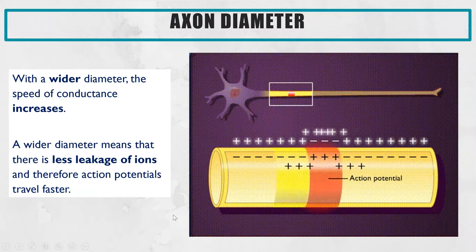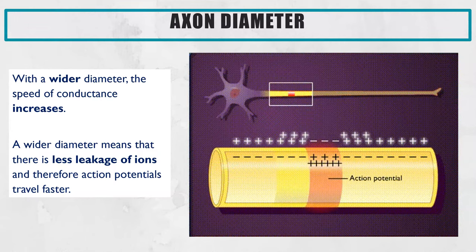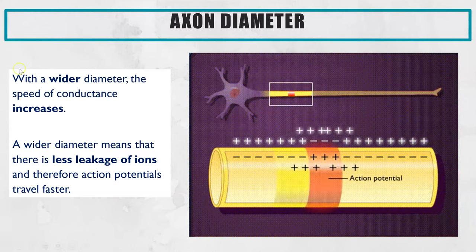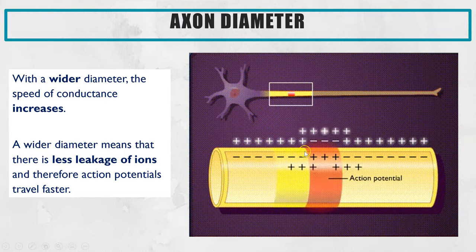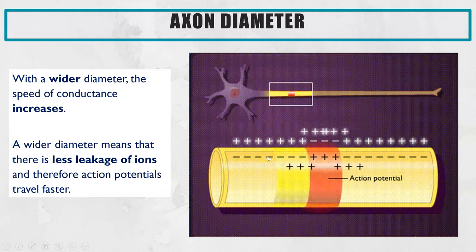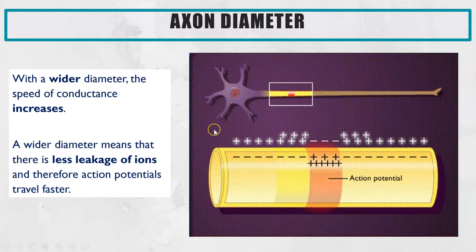The second factor is the diameter of the axon. The wider the diameter, the faster the speed of conductance. Thinking back to GCSE physics, it's the same idea as electricity running through a wire — the wider the wire, the less resistance and the faster the speed. In this case, a wider diameter means fewer ions leak out, so action potentials can be generated faster because you'll reach the threshold potential of minus 55 millivolts much quicker.